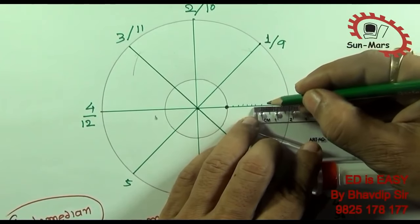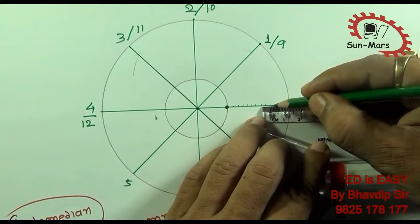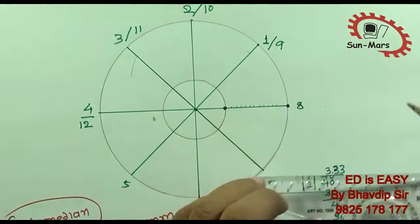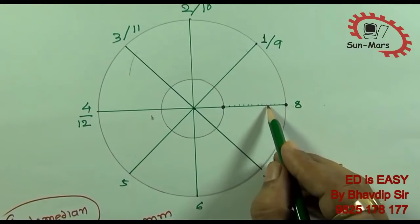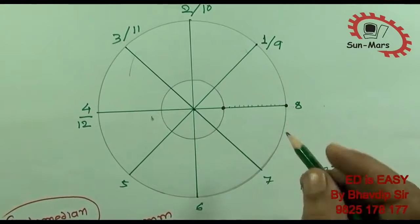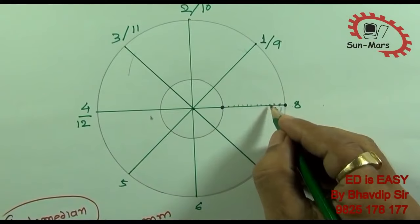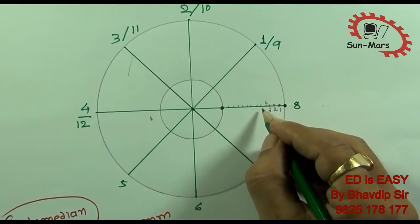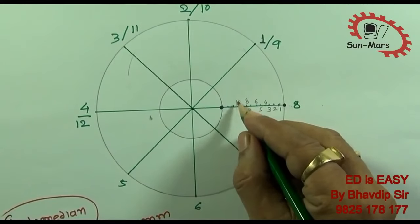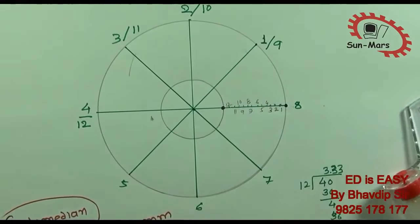Continuing the equal divisions of 3.33: 5, 6, 7, 8, 9, 10, 11, 12. Like this, we will create equal divisions across all 12 segments.